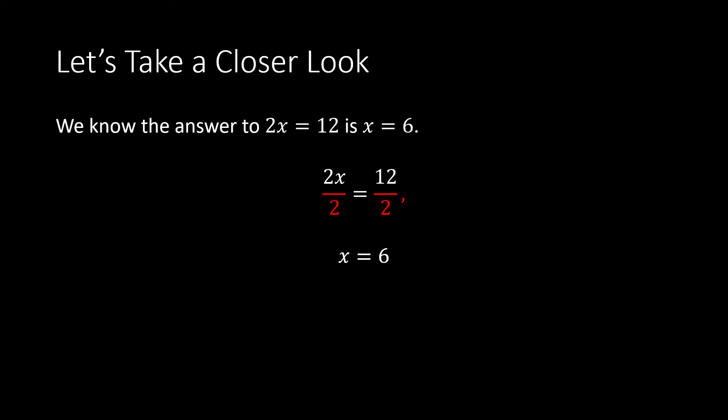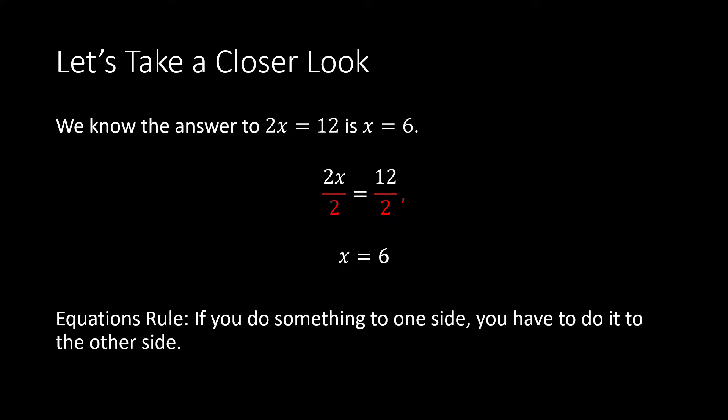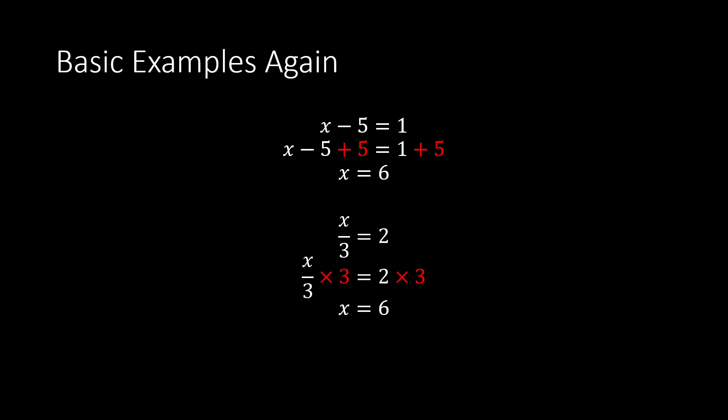Let's take a closer look at that easy example: 2x equals 12. We don't want 2x equals something — we want x equals something. So we get rid of the 2 being multiplied to x by dividing by 2, because division is the opposite of multiplication. We divide the left side by 2: 2x divided by 2 is just x. The rule of equations is if you do something to one side, you must do it to the other side, so 12 divided by 2 is 6, giving us x equals 6.